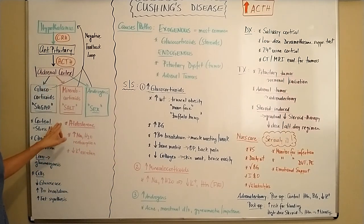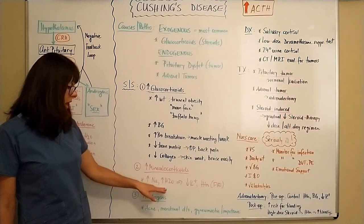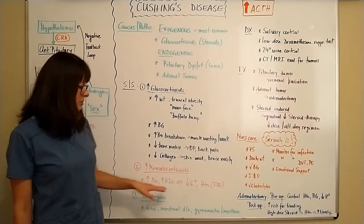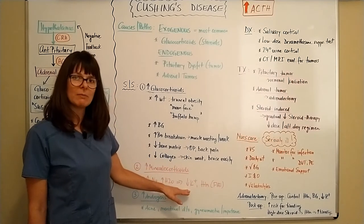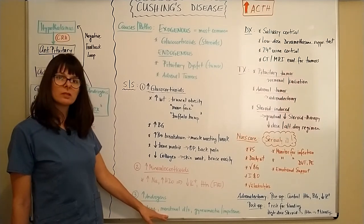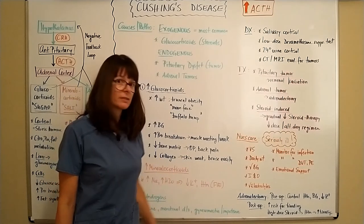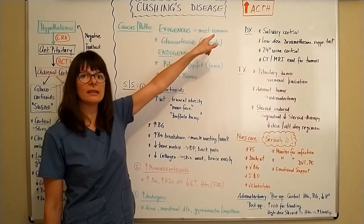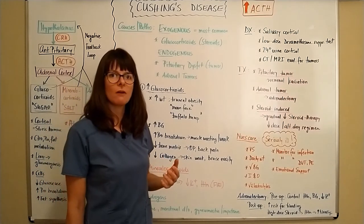Looking at mineralocorticoids: if aldosterone levels are increased, the body increases absorption of sodium, water follows, and potassium is excreted in exchange. This increased sodium and water reabsorption leads to hypertension and puts the patient at risk for fluid volume excess as well as hypokalemia. For increased production of androgens, signs and symptoms can include acne, menstrual disorders in females, and gynecomastia or enlargement of the breasts in male patients, as well as impotence. Steroid-induced Cushing's disease or any elevation in ACTH will often lead to a more feminine appearance in male patients and a more masculine appearance in female patients.